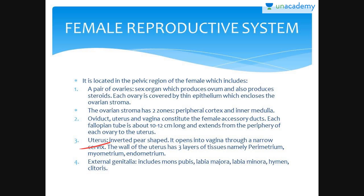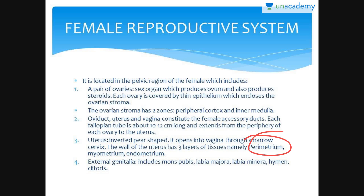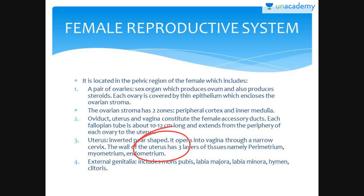The uterus is inverted pear-shaped and opens into the vagina through a narrow cervix. The wall of the uterus has three layers of tissues: perimetrium, myometrium, and endometrium. The uterus is also called the womb. Perimetrium is the external thin membranous layer, myometrium is the middle thick layer of smooth muscles, and endometrium is the inner glandular layer.